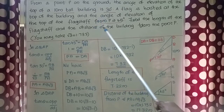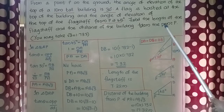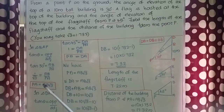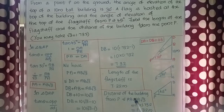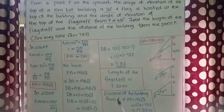There is one more question: the distance of the building from point P, that is PA. We proved PA = AB√3. So we can write PA = AB√3. The value of AB is 10, so we get PA = 10 × 1.732 = 17.32 meters. We can conclude the distance of the building from point P is 17.32 meters.